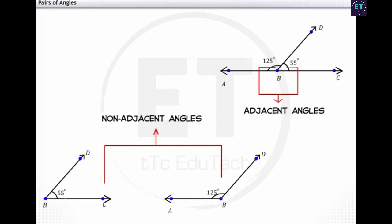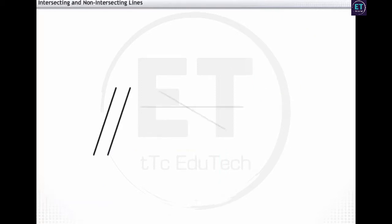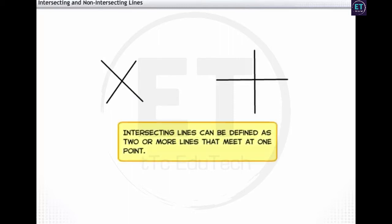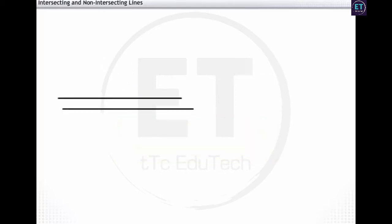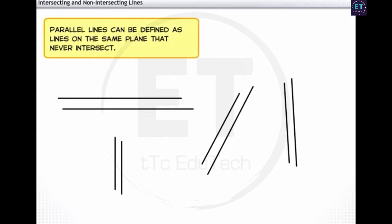Just as we have different types of pairs of angles, we have different types of lines too. Look at these lines. You can see some lines passing through each other while others are not. Let's look at these set of lines. They are crossing one another at a single point. Such lines are called intersecting lines. Intersecting lines can be defined as two or more lines that meet at one point. Now, let's look at another set of lines. They neither meet nor cross at any point. Such lines are called parallel lines. Parallel lines can be defined as lines on the same plane that never intersect.